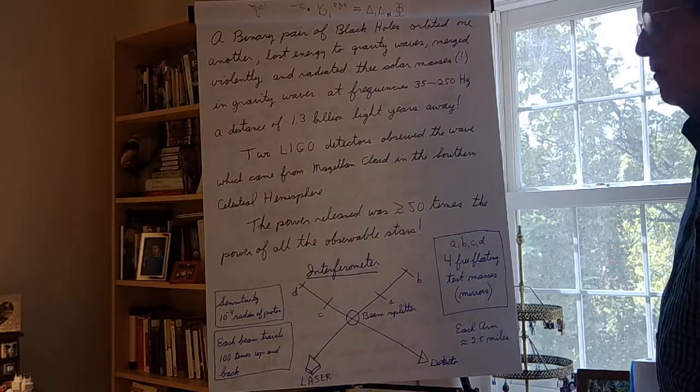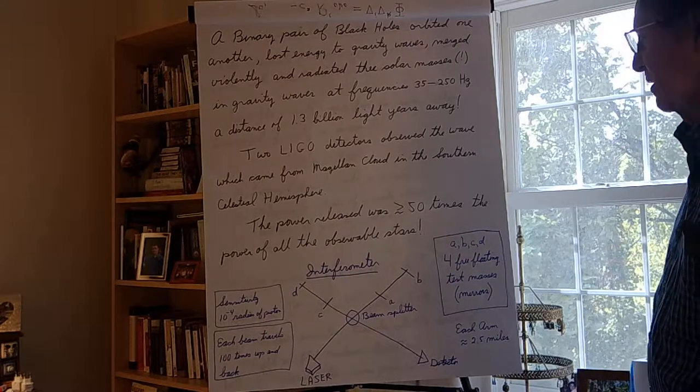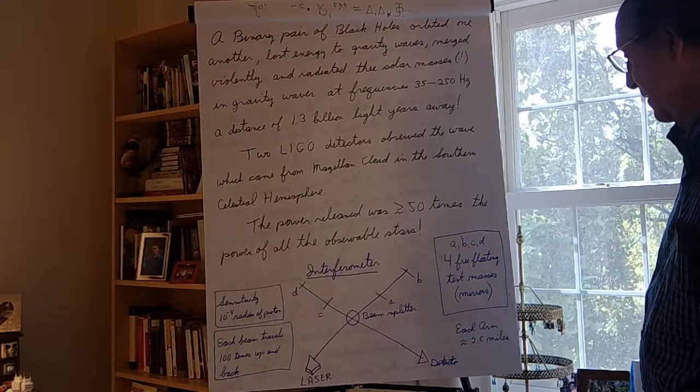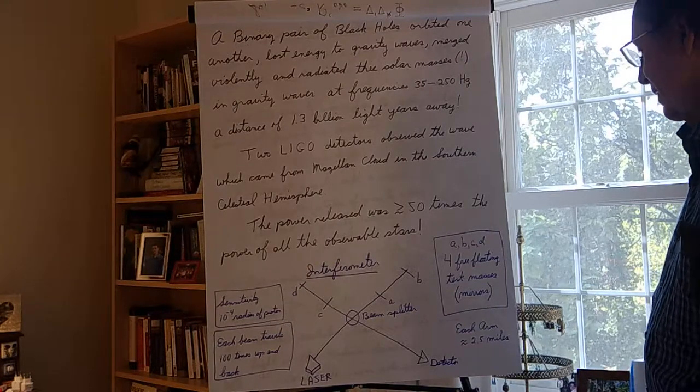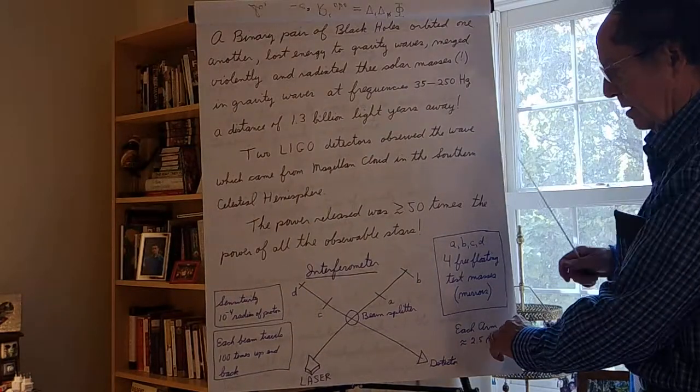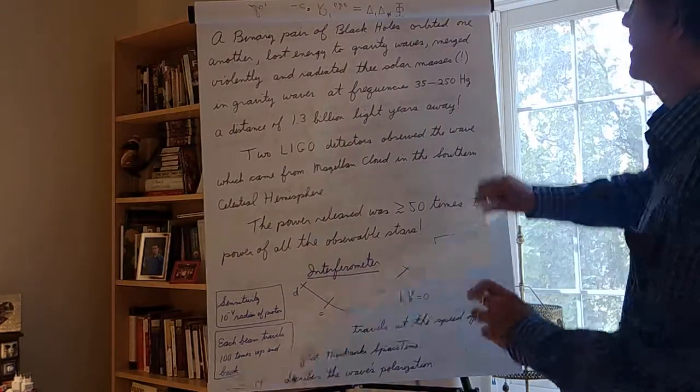Each beam travels about a hundred times up and back in intense beams. You'll do that to increase the sensitivity by approximately a factor of a hundred. And at the points A and B and C and D, you have four free-floating test masses, mirrors, isolated from the environment but able to move in a transverse direction without any appreciable external forces, very difficult to achieve. This experiment won a Nobel Prize for good reason. I think it should have been a Nobel Prize just for engineering, this detector alone was quite a marvelous achievement. Each arm is about two and a half miles long.